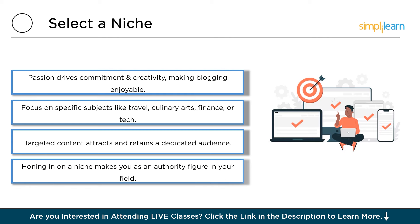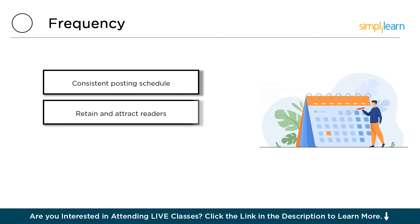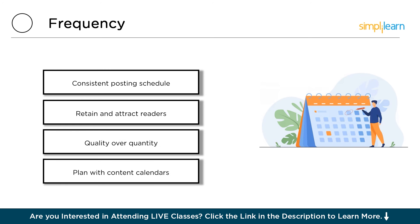The next thing to take care of is frequency. Developing a realistic and consistent posting schedule is pivotal in establishing a successful blog. Whether you decide to publish content once a week, bi-weekly, or even daily, consistency is the cornerstone of audience growth and engagement. A regular posting schedule not only helps in retaining your existing audience but also plays a crucial role in attracting new readers. It signals to search engines that your site is active and relevant, thereby improving your blog's visibility and ranking. Balance quality with quantity, and aim to create a schedule that is manageable for you while keeping your audience engaged.